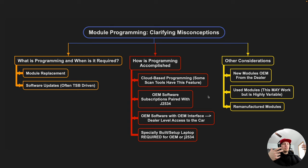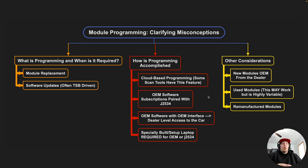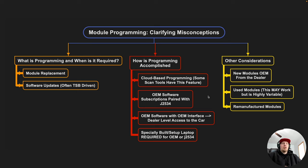So you're going to ask yourself: when is programming required? We're going to get into that. We'll talk about how we accomplish programming, what kind of tools are required, what the different options for tooling are, what are the limitations of that tooling depending on which tooling we decide to use, and also some of the other things respective to programming related to computers — meaning PCs. If we're using PCs to do programming, which is what you have to do with OEM software, there are some very specific things you need to be aware of that a lot of people are not.